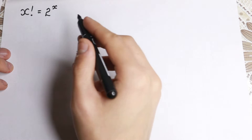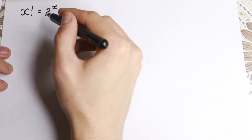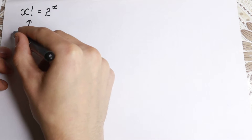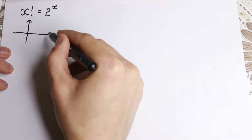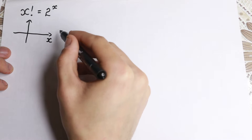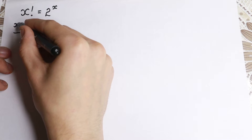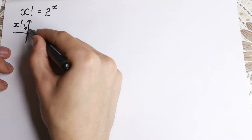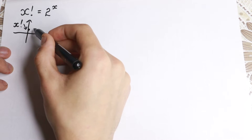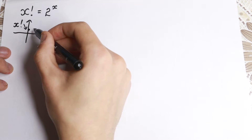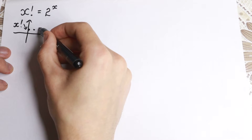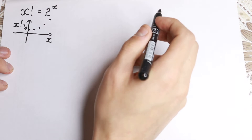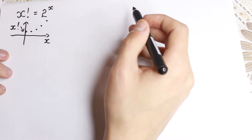So first of all, let's draw two graphs and think about them. We have x factorial — let's draw a graph of x factorial and see what information we get. For example, if x is zero, then y equals 1. If x is greater, then factorial grows — for example, 4 factorial is a huge number — and it goes to plus infinity. This is our x factorial graph.